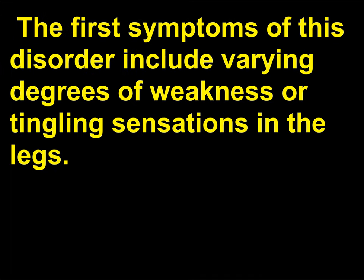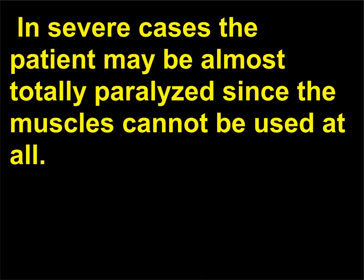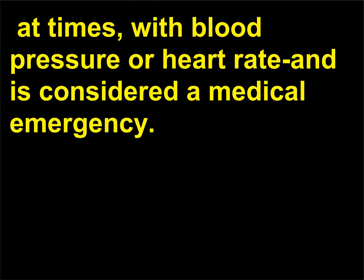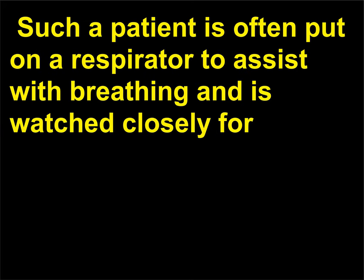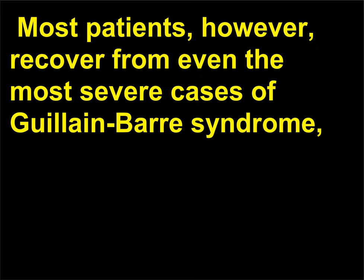The first symptoms of Guillain-Barré disorder include varying degrees of weakness or tingling sensations in the legs. In many instances, the weakness and abnormal sensations spread to the arms and upper body. In severe cases, the patient may be almost totally paralyzed. In these cases, the disorder is life-threatening, potentially interfering with breathing, and a patient is often put on a respirator and watched closely for problems such as an abnormal heartbeat, infections, blood clots, and high or low blood pressure. Most patients, however, recover from even the most severe cases of Guillain-Barré syndrome, although some continue to have a certain degree of weakness.